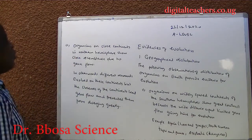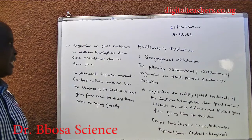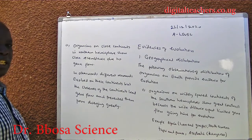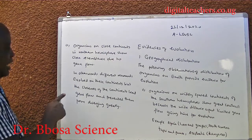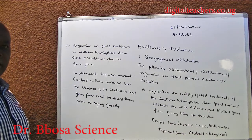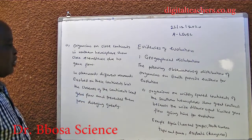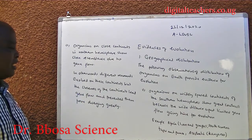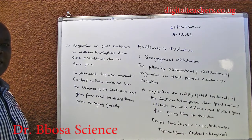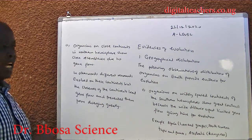Two: organisms on connected continents in the northern hemisphere show close resemblance due to gene flow. In other words, the different mammals evolved on these continents, but the closeness of the continents led to gene flow and prevented them from diverging greatly.